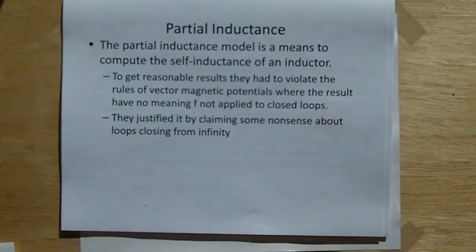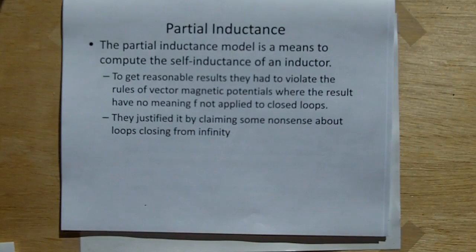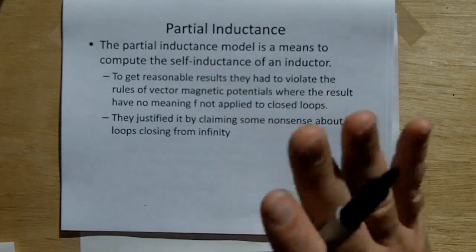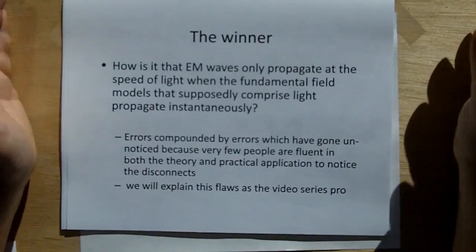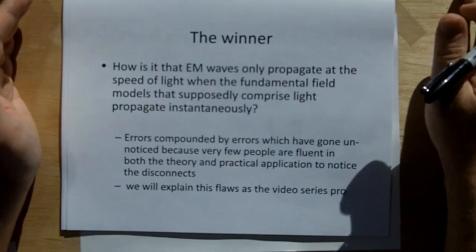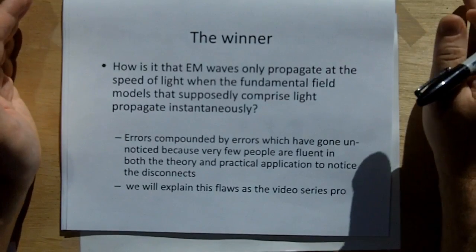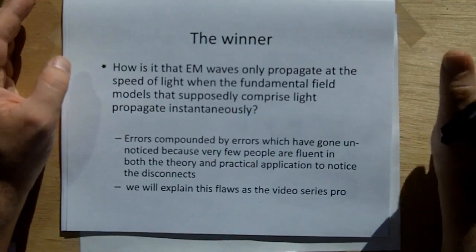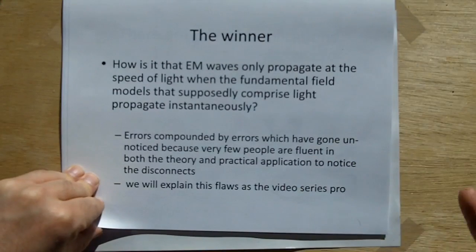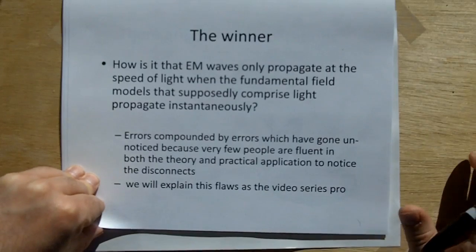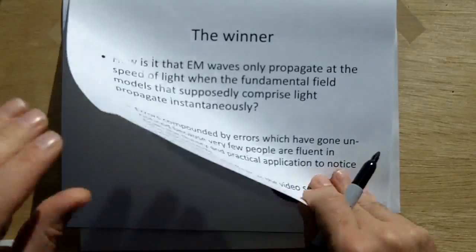You look in the electromagnetics book, and it will say very specifically that unless you're considering closed loops, vector magnetic potentials has no meaning by definition. But that doesn't stop these people. They apply it to open loops and do some weird stuff to make it all work, and they get reasonably good answers. So again, this is an application that gives good results in spite of the fact that it's in violation of classical theory. Oh, and they justify it by claiming some nonsense about loops closing from infinity. If you have to apply unicorn dust to your derivation, you should check and make sure that the models you're using are good.